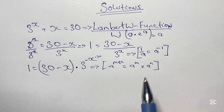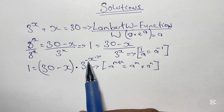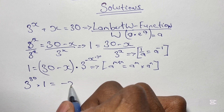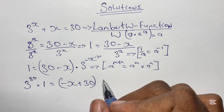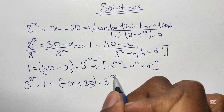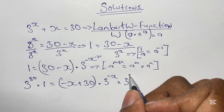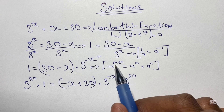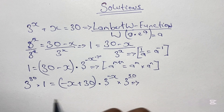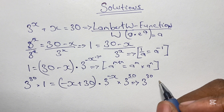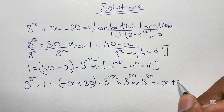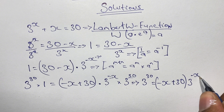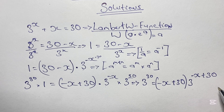Referring to laws of indices, we know that a to the power of m plus n equals a to the power of m times a to the power of n — that is how we can get the plus 30 in the exponent. So we multiply both sides by 3 to the power of 30. This gives us 3 to the power of 30 equals (negative x plus 30) times 3 to the power of negative x. Then applying the law of indices with the same base, we simplify 3 to the power of negative x times 3 to the power of 30 as 3 to the power of negative x plus 30.